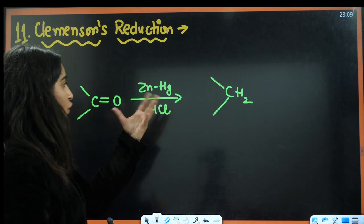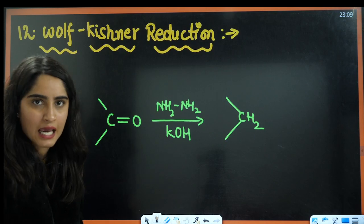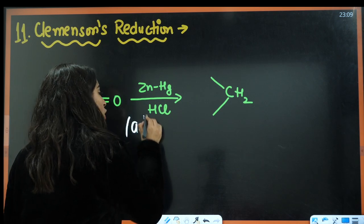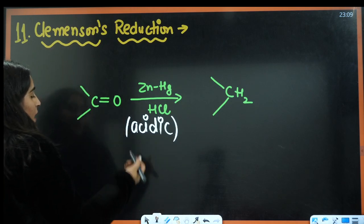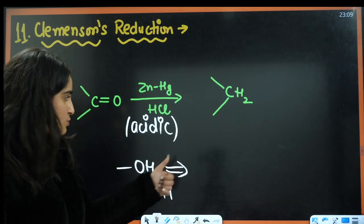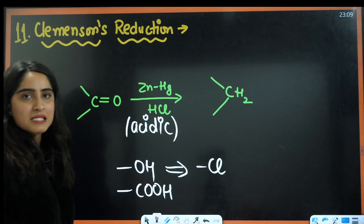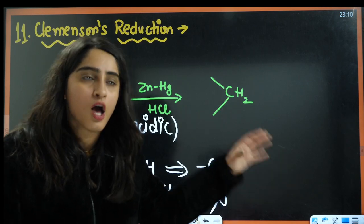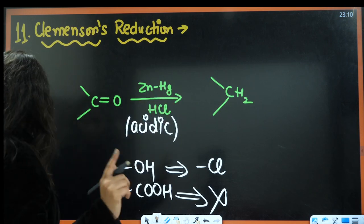Next is Clemmensen reduction. For Clemmensen, we have a carbonyl group. Clemmensen and Wolff-Kishner reduction are both same in terms of converting carbonyl to CH₂, but differ in conditions. Clemmensen uses acidic conditions — zinc amalgam and HCl. If there's an OH group present, it will react with the acidic medium. The reagent is zinc amalgam and HCl (acidic conditions must be noted).